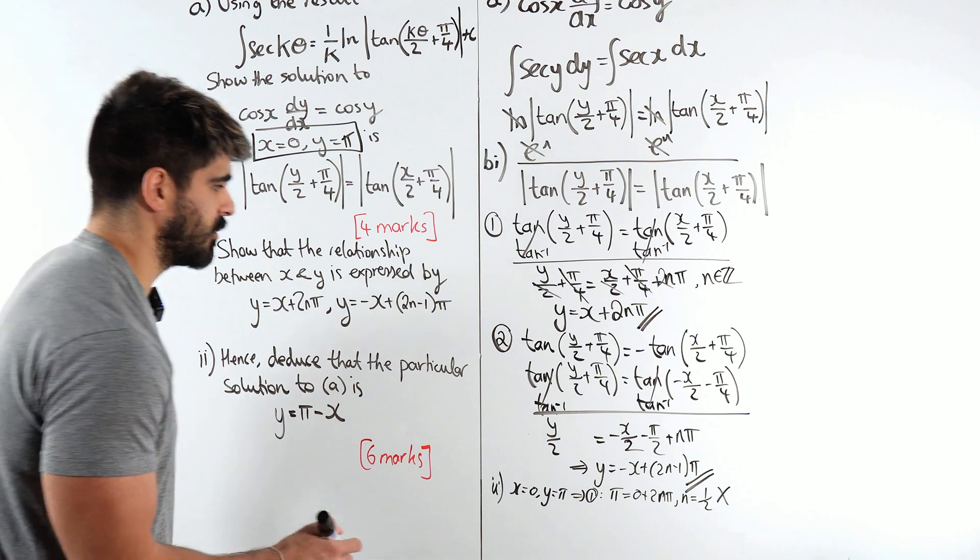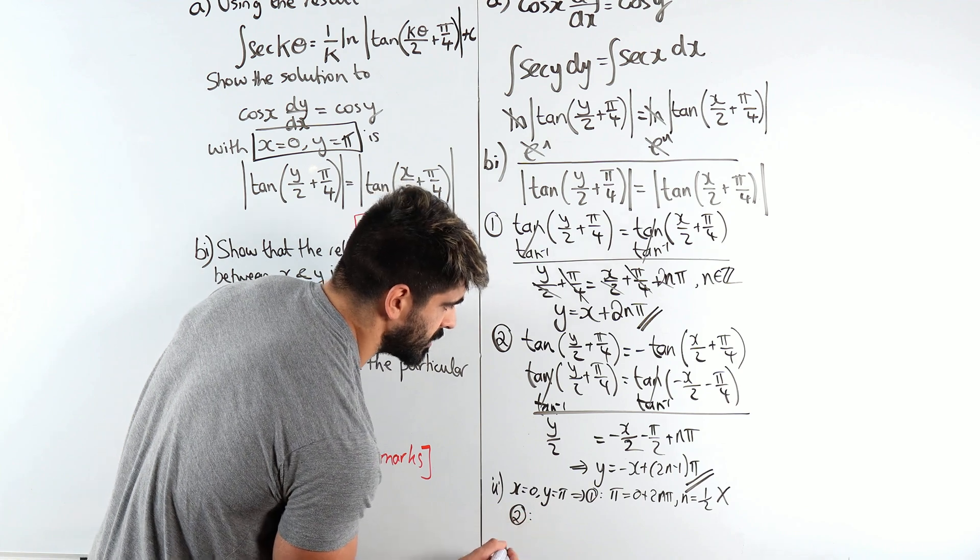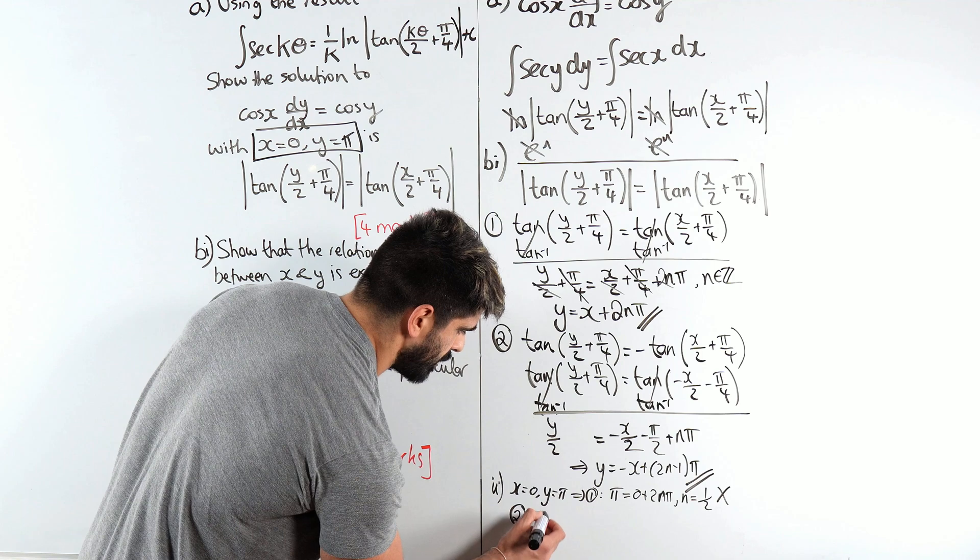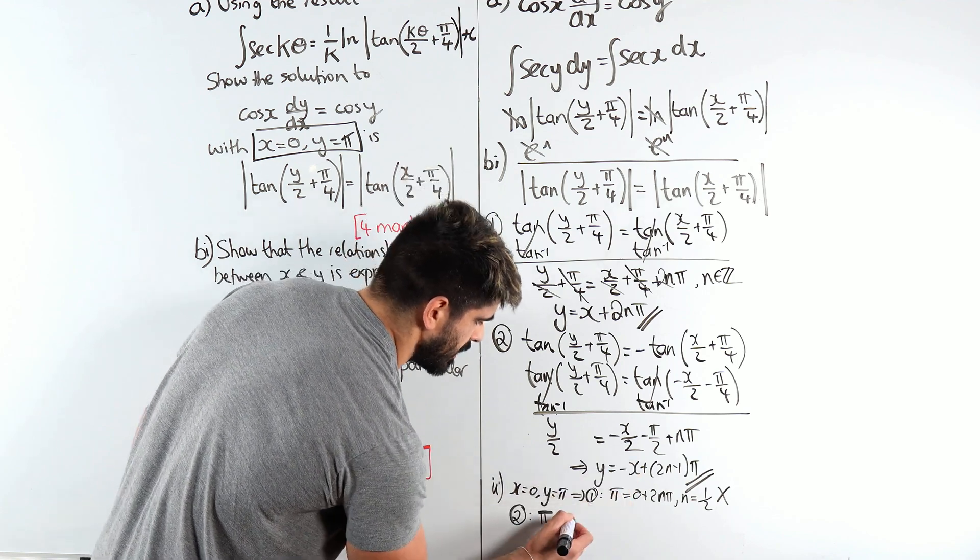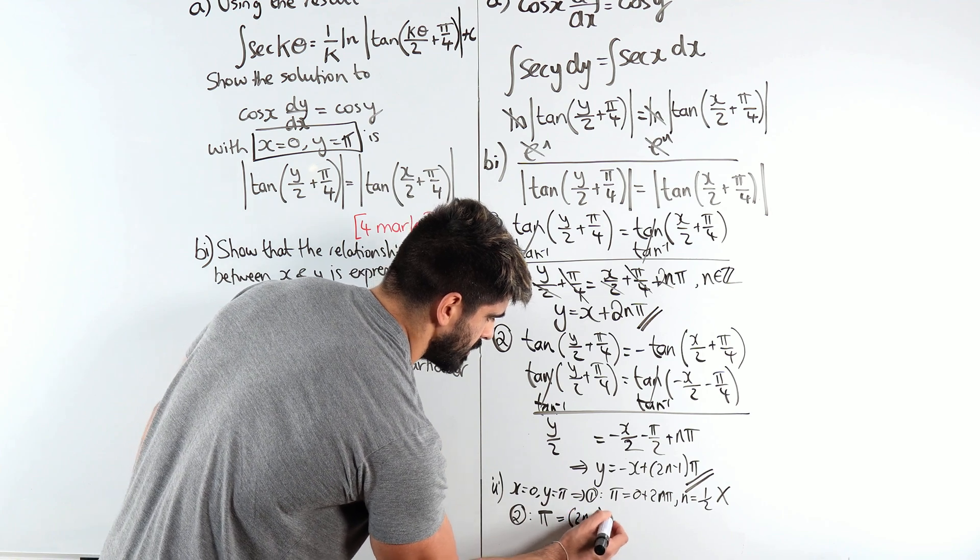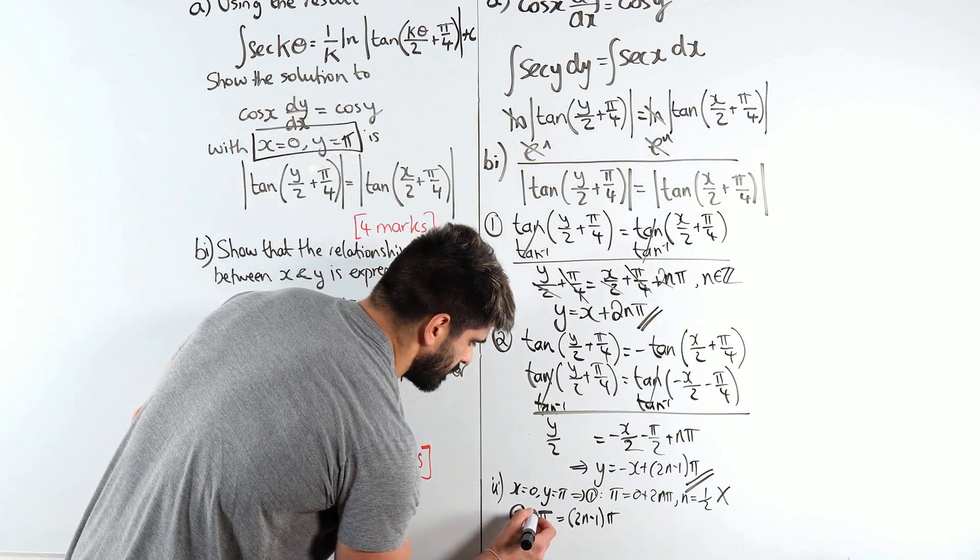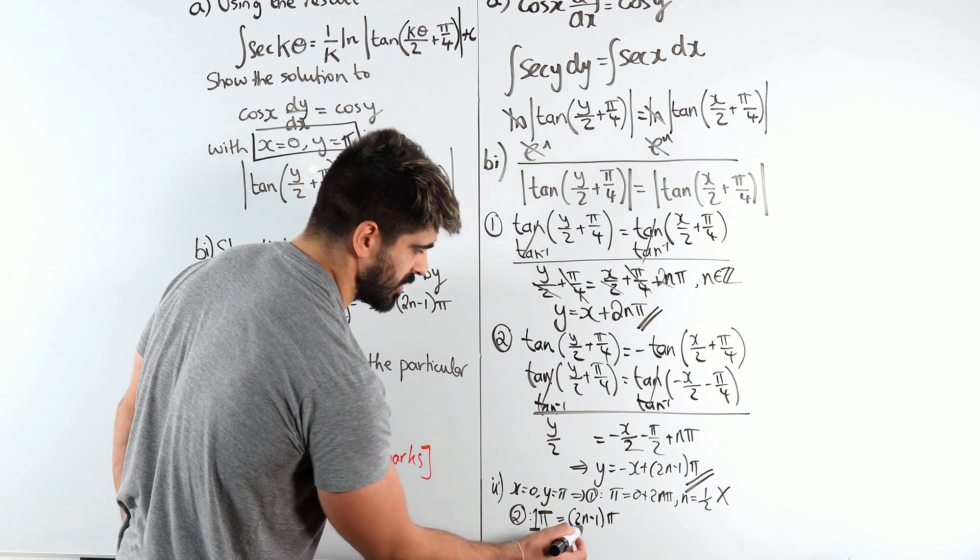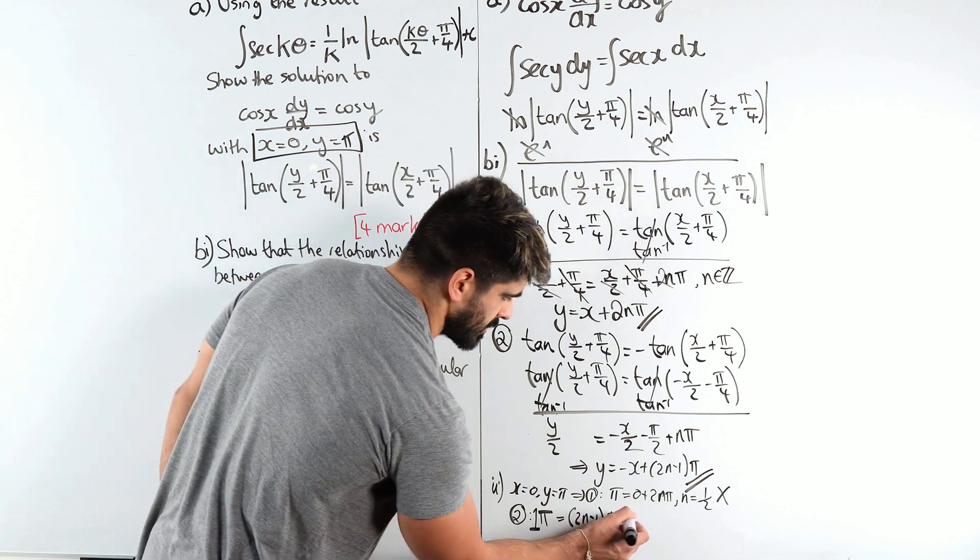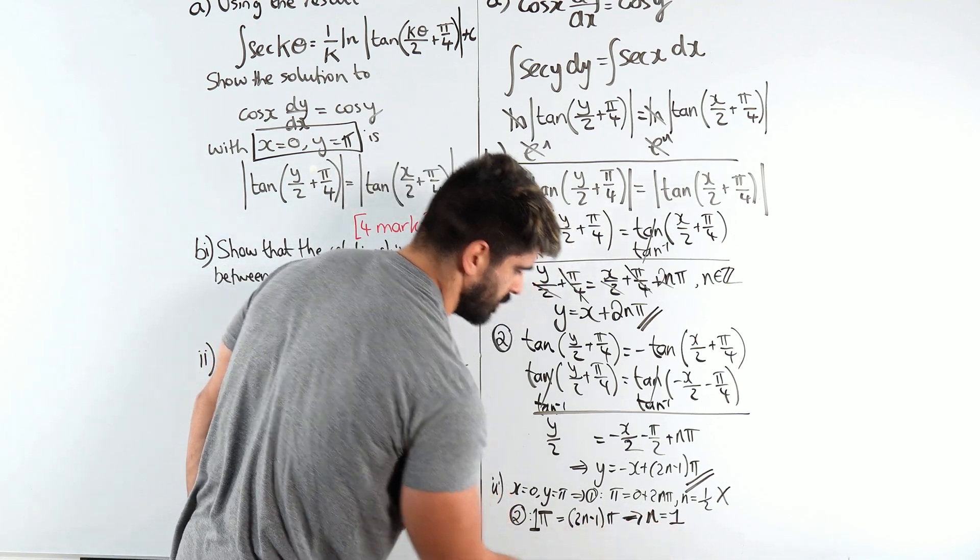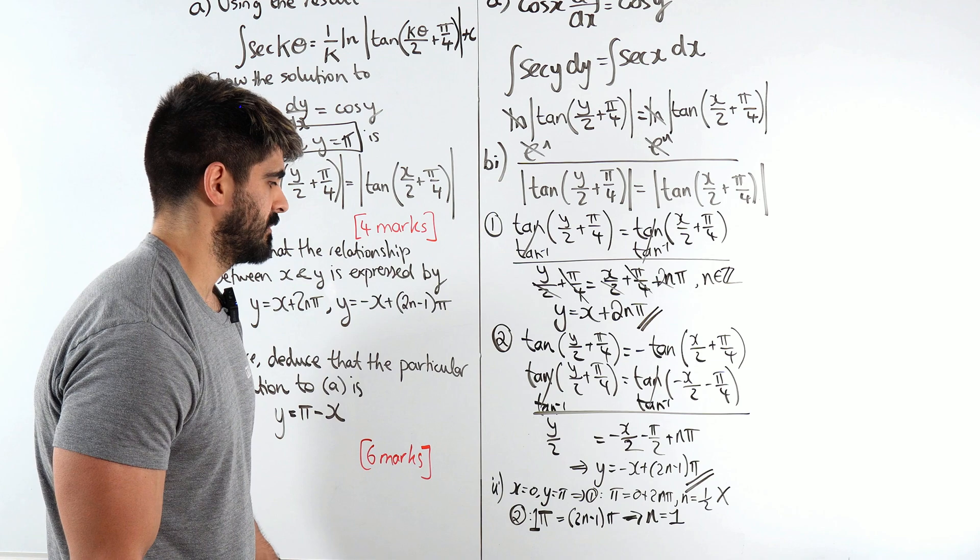If we sub into the second one, into equation two, we would get y is pi equals negative zero, which is just zero, equals 2n minus 1 pi. Now what does n have to be then? The coefficient here is 1. So when 2n minus 1 equals 1, n is just 1. So this just gives us n is 1. And then we are basically done.